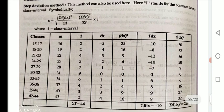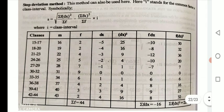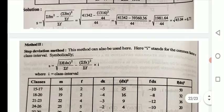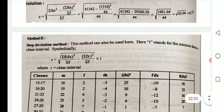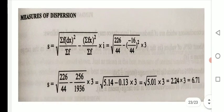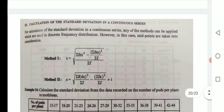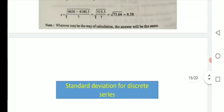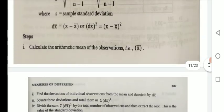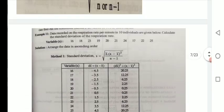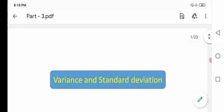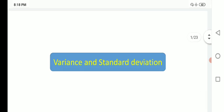The second method is called the step deviation method, but there is no need to focus on this — it is not expected. Try to solve using the first method only. This completes the third topic — measurement of dispersion. If you have any problem, message or call and we will sort it out. Thanks.